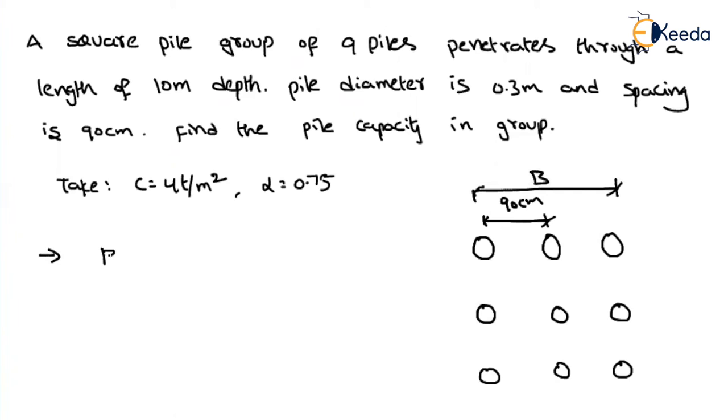b, as you remember the formula, that is (n-1) × s + d. How many number of piles are there in a row? 3, minus 1, into spacing. If I represent in meters, 0.9, plus diameter is 0.3. So if you solve this, you are getting the width of the square pile group is 2.1 meter.